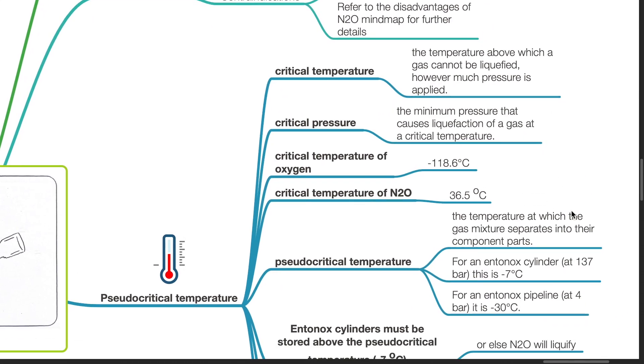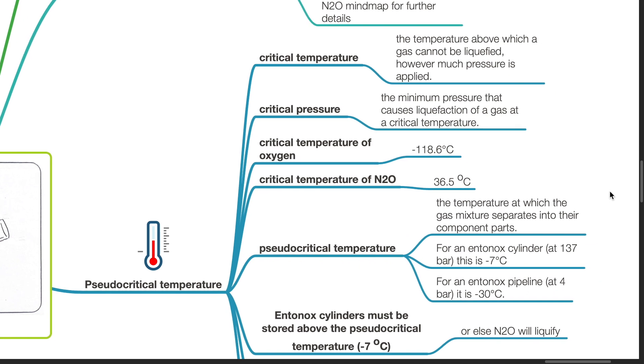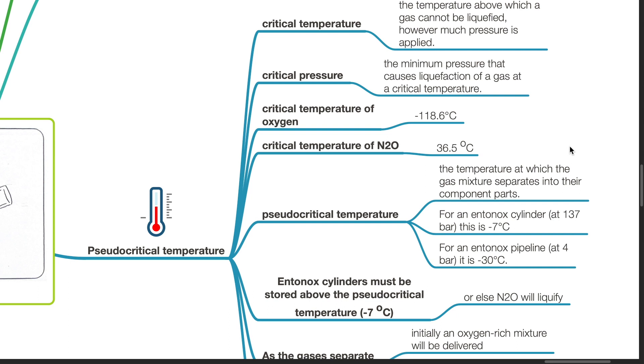Pseudo-critical temperature: Critical temperature is the temperature above which a gas cannot be liquefied, however much pressure is applied. Critical pressure is the minimum pressure that causes liquefaction of a gas at critical temperature. Critical temperature of oxygen is negative 118.6 degrees Celsius, and critical temperature of nitrous oxide is 36.5 degrees Celsius.